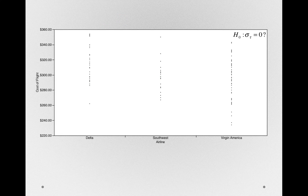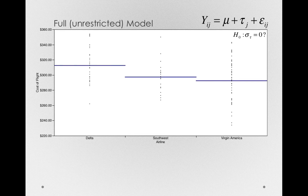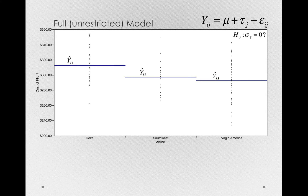Let's consider our actual groupings now. This is a situation where we're actually asking the question of whether the variance of the taus in the population is zero. Let's see why the error term from the full model makes the most sense here. So let me give you our actual treatment offsets — the prediction for all the individuals in the first group, the second group, and the third group. Remember, the prediction for any individual in any group is just that group's mean. So our error term in this full model will be the error about these particular predictions — the error of the individuals within their individual groups.